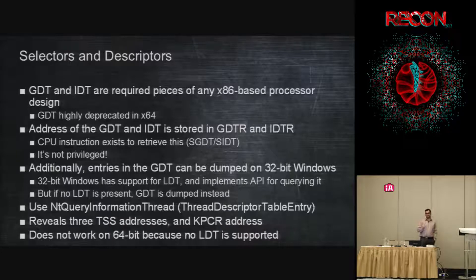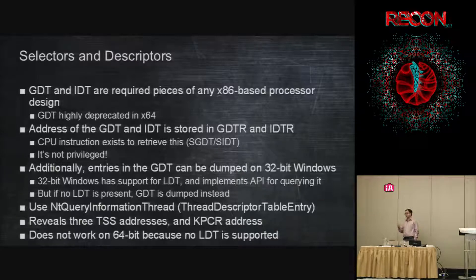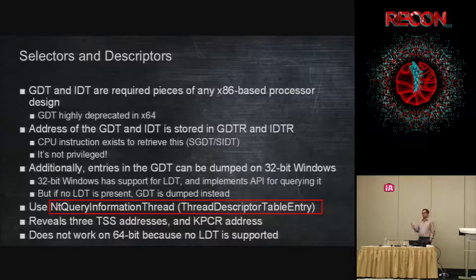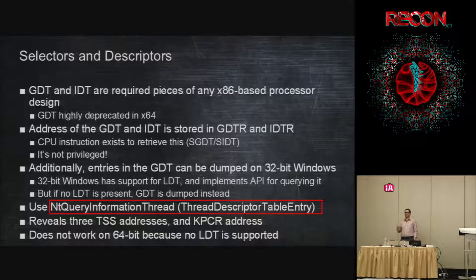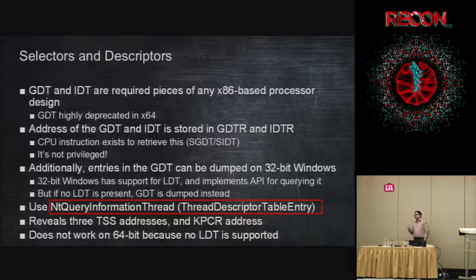On 32-bit you can also read the GDT, which has segments and TSS (Task State Segments) containing things like the kernel stack. By using NtQueryInformationThread on your current thread, on 32-bit you can read the entire GDT — because 32-bit Windows lets you have a local LDT, and if you don't have one, it lets you read the global GDT. With that you can get the address of the KPCR, a critical kernel structure, because KPCR is stored in the FS segment. On 64-bit there's no LDT so you can't use this API, but you can still get the GDTR and IDTR addresses.